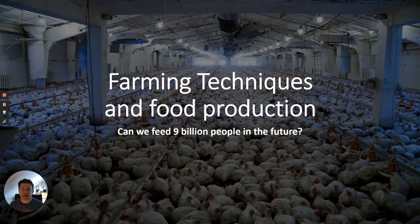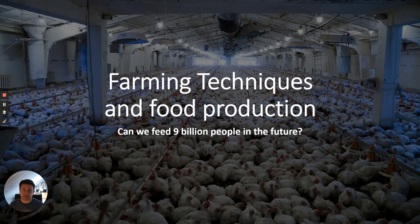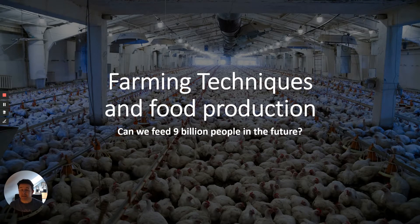Dr Biology here, and this video is related to ecology, so this is AQA GCSE Biology only, the ecology section. This follows on from another one of my videos related to food security. For this video I'm going to be talking about farming techniques and food production, with the same theme: can we feed 9 billion people in the future? How have we adapted farming techniques to produce more food?